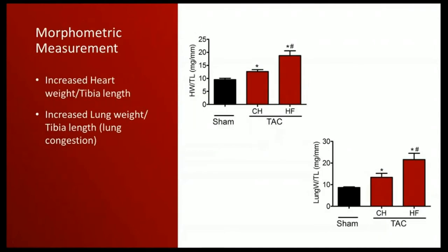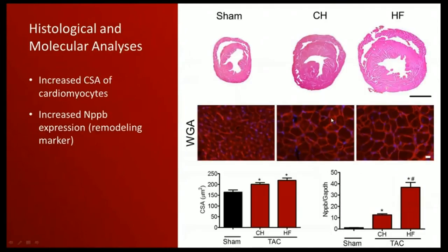Morphometric study confirmed our assumption: heart weight-to-tibia length increased in both stages, but was massively increased in heart failure compared to compensated hypertrophy. Lung weight-to-tibia length ratio, representing lung congestion, was also massively increased in heart failure. Histological study showed the heart increasing in size and cardiomyocytes increasing in diameter. Molecular study using the marker BNP also showed increases in both stages, but massively elevated in heart failure compared to compensated hypertrophy.